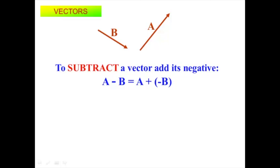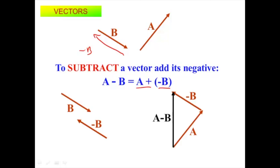How do we subtract vectors? Subtracting vectors is just adding the negative of the second one. A minus B is A plus the negative of B. The negative of B is in the exact opposite direction — just flip the vector around. So there's negative B, and A plus negative B gives the resultant using tip to tail.